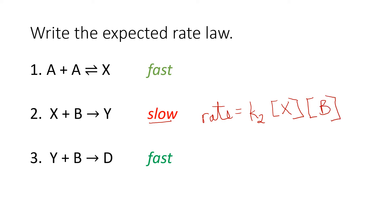Something important to know is that a rate law for the overall reaction cannot have an intermediate in it. So the concentration of X cannot be there — we need to find a way to substitute the reactants for concentration of X.